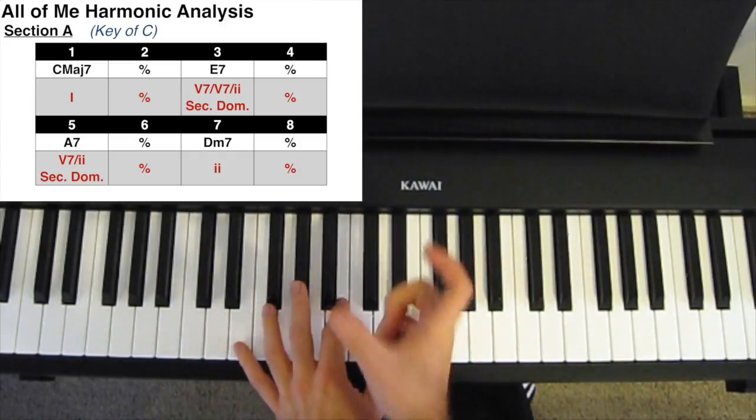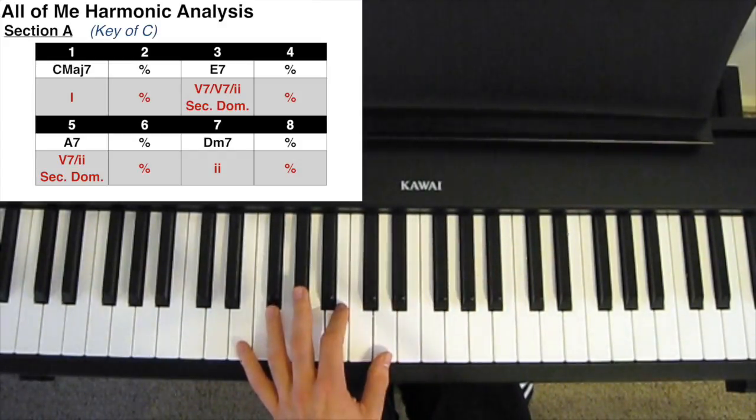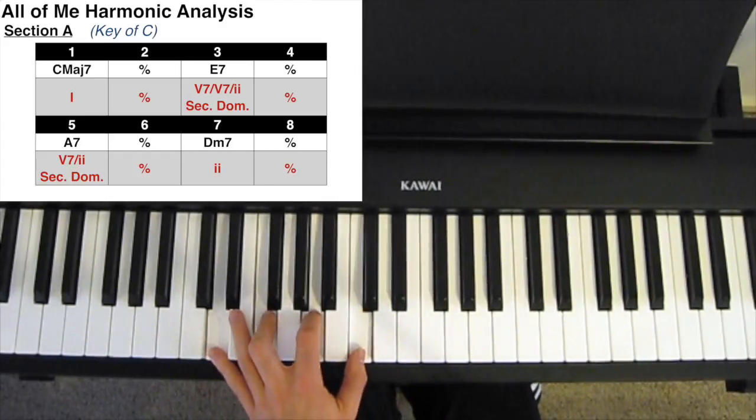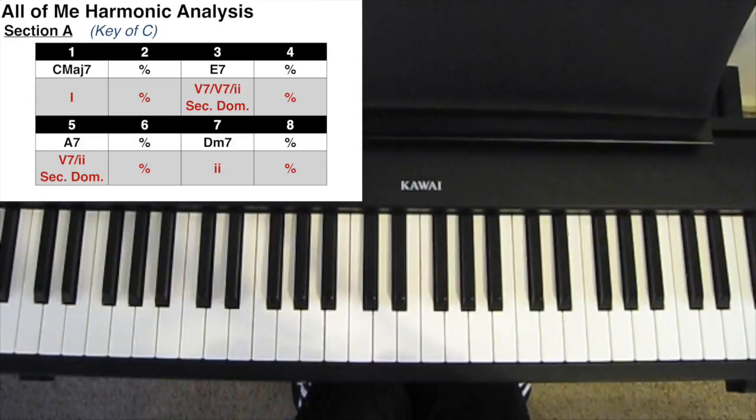We have a very small fragment of the backcycling dominance progression, with that E7 going to the A7. That's all in the key of C.